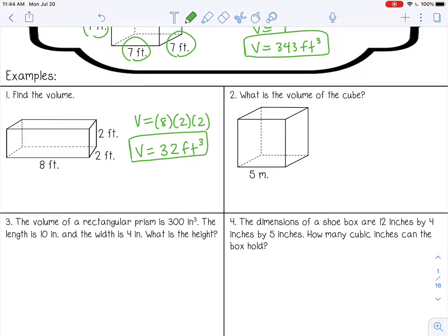All right, number two, what is the volume of the cube? Now it only gave us five, but we know since it's a cube, all the dimensions will be five meters. So volume equals five cubed or five times five times five, which is 125 meters cubed.